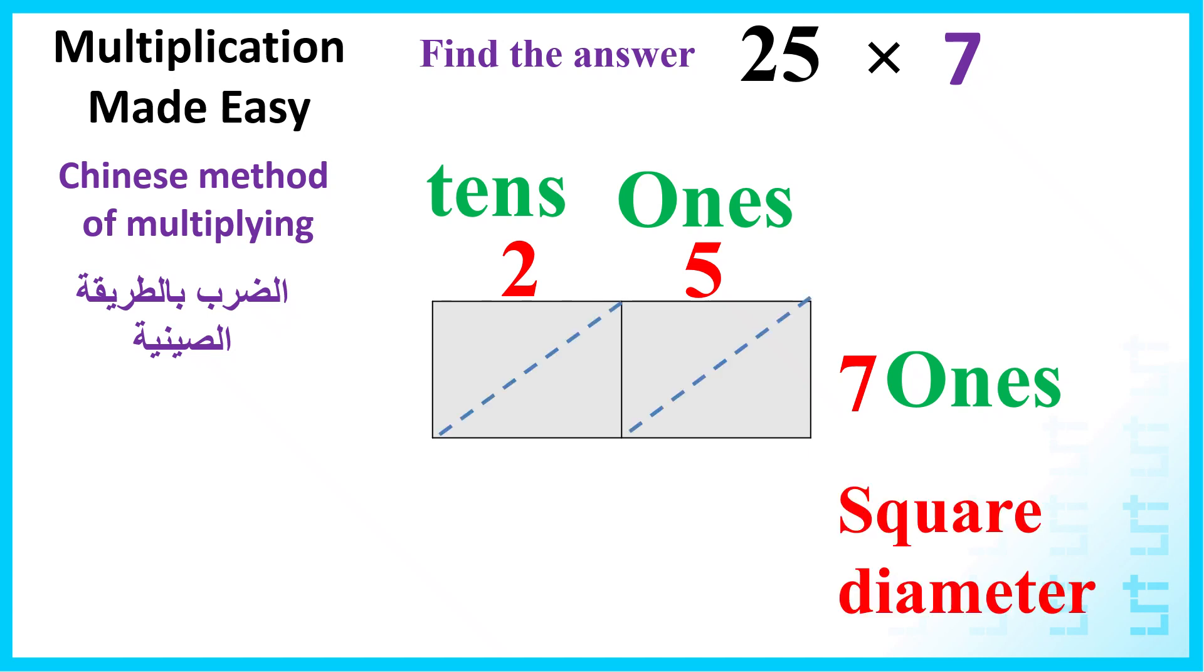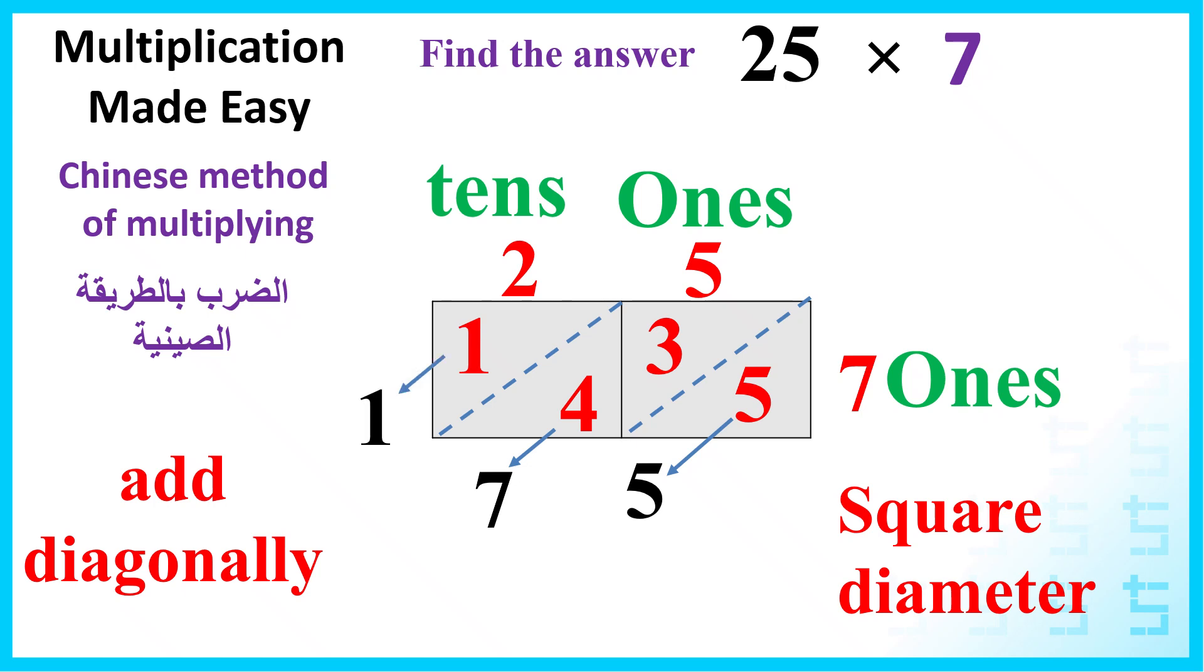Then we will draw the diameter of each square and then multiply the numbers. 7 times 5 equals 35. 7 times 2 equals 14. Now we will add the numbers diagonally. 5 is 5. 4 plus 3 is 7, and 1 equals 1. The answer equals 175.